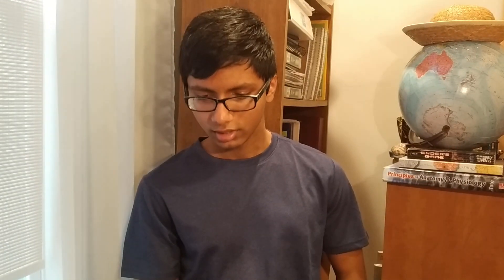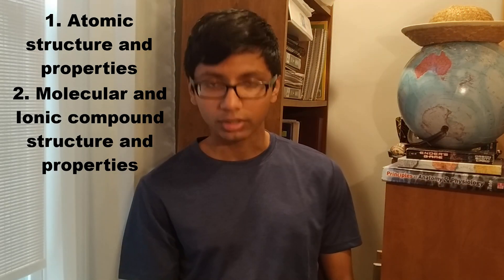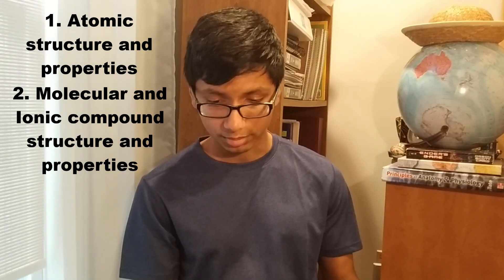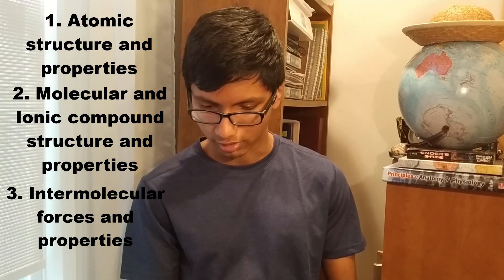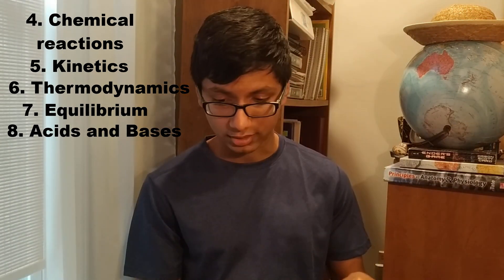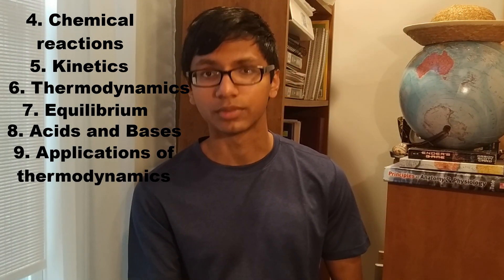Now I'm going to go over the parts of the AP Chem course material that I found most difficult. The AP Chem content can be divided into nine units: atomic structure and properties, molecular and ionic compound structure and properties, intermolecular forces and properties, chemical reactions, kinetics, thermodynamics, equilibrium, acids and bases, and applications of thermodynamics. That is a lot of material.